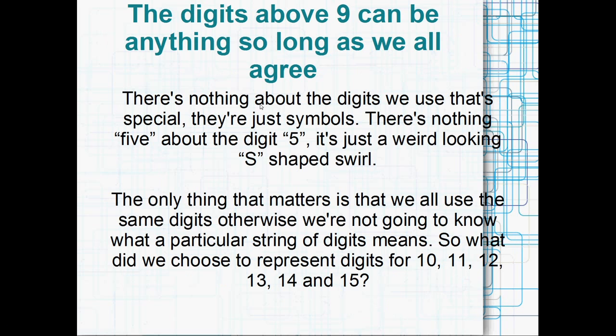And the digits that we actually use for numbers, I mean I'm not going to go into the history of them, I don't know the history of them, but I think they're Arabic numerals. They're basically just weird little shapes. We're so used to seeing this weird little S shape to mean 5, but there's nothing really 5 about it, it's just a strange looking S. The thing that we've got to do is just agree on what digits we're using. So what digits did they end up choosing for the numbers 10, 11, 12, 13, 14, and 15?